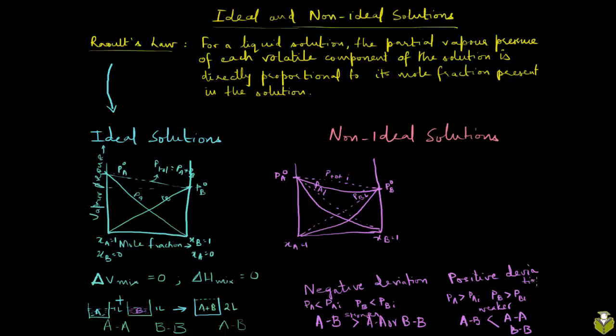Positive deviation. In this case, again, what happens is you have the same lines that are represented by Raoult's law, ideal case. PB naught, PA naught, Xa equals 1, Xb equals 1.